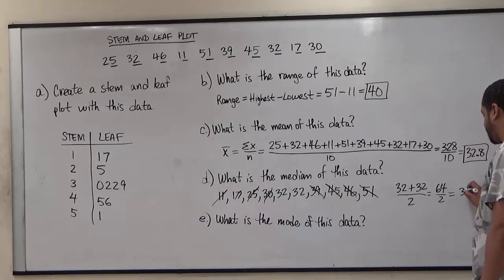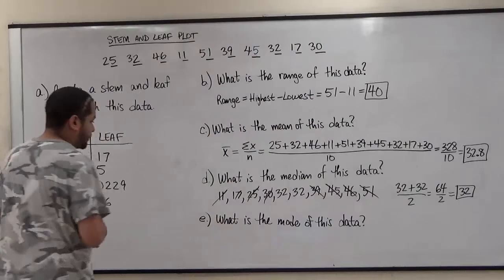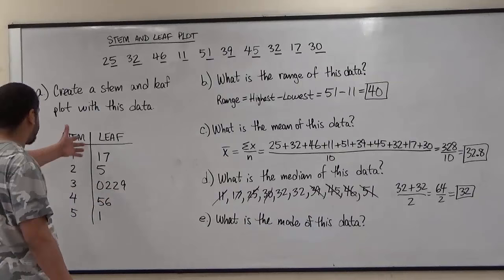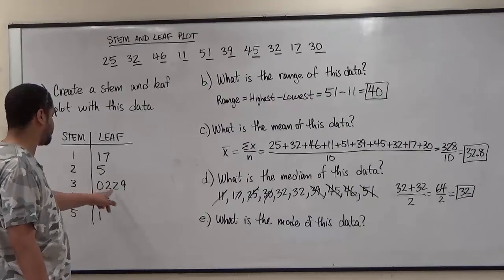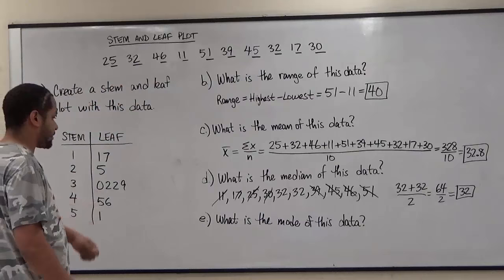Now for the final thing we have to do here is the mode. We want to see which is the most repetitive data on this chart. We use the stem and leaf chart and look at all the leafs and see for any repeating numbers. In this case the most repetitive number in this line is two and two, which represent thirty-two and thirty-two. Thirty-two is the only number that repeats on this list, and so the mode is thirty-two.